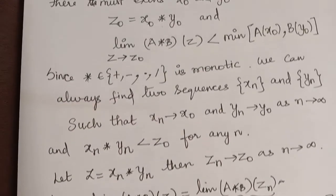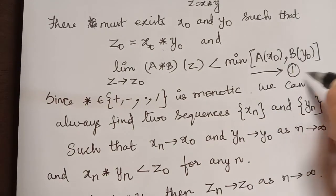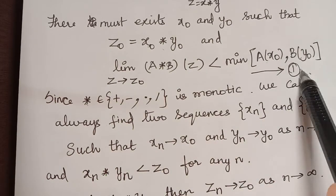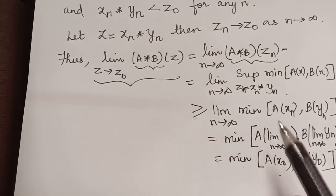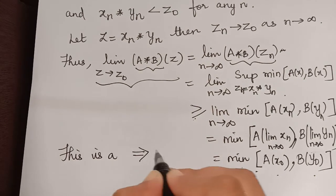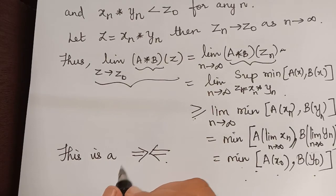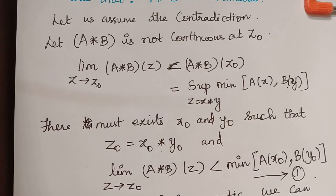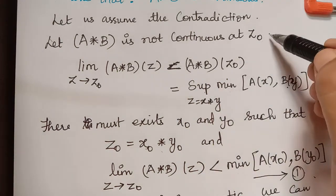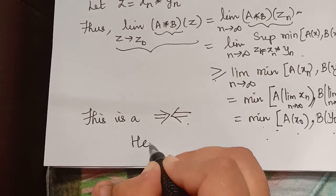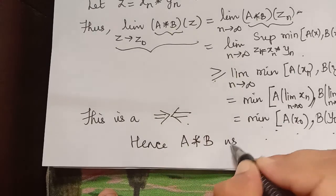So we obtain the limit to be greater than or equal to the minimum of a(x₀) and b(y₀). But from equation 1, we observed that this limit is strictly less than the minimum of a(x₀) and b(y₀). This is a contradiction. Therefore our assumption that a★b is not continuous at z₀ is wrong.